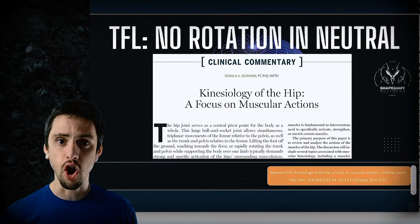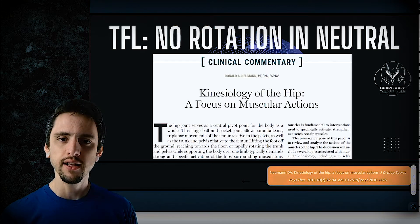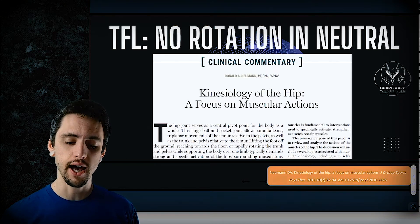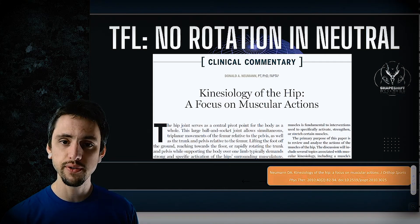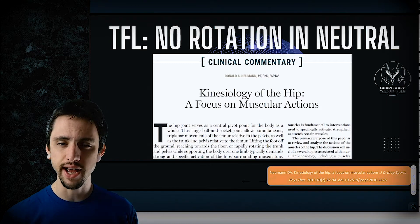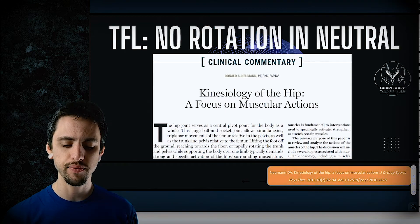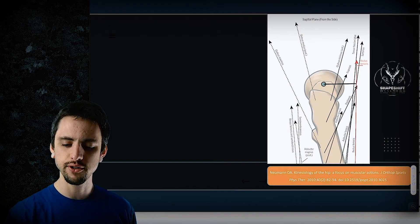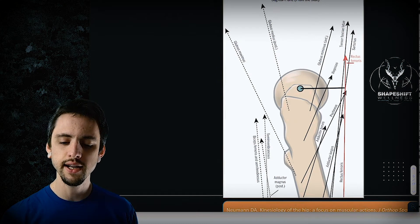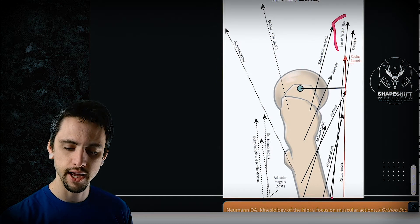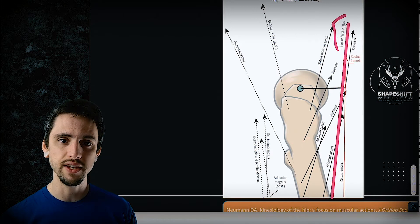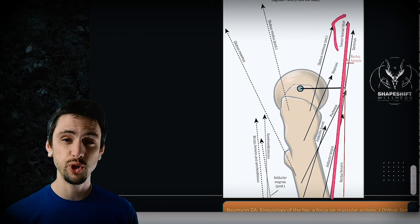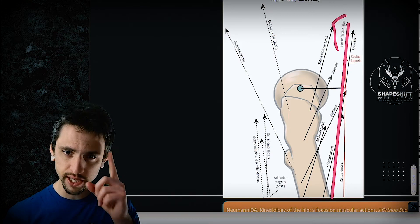Before we get into the drawings and the visual understanding of the anatomy, let's quickly touch on the research so you know I'm not just making this up. The article 'Kinesiology of the Hip: A Focus on Muscular Actions' from 2010 outlines the actions, lines of pull, and moment arms of all hip musculature — 21 muscles in total. Here's the TFL and its line of pull; notice it goes way down because the TFL connects all the way to the knee.